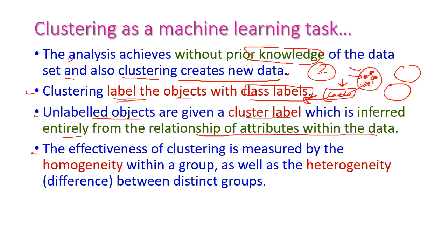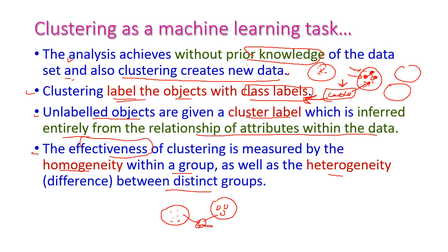The effectiveness of clustering is measured by homogeneity within a group as well as heterogeneity between distinct groups. That is, data inside a cluster are similar to each other, and data from different clusters are different from each other. This is what defines the effectiveness of clustering.